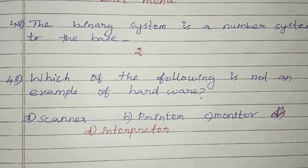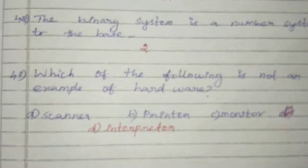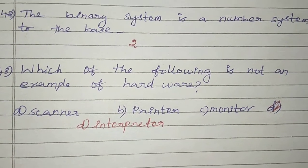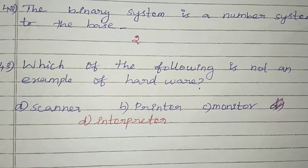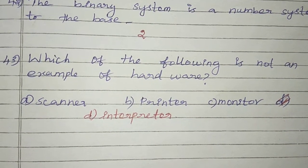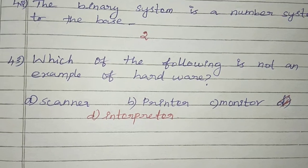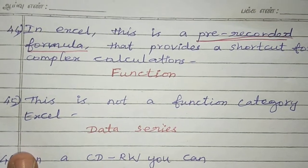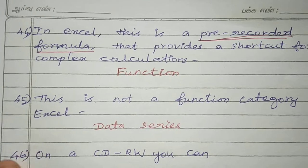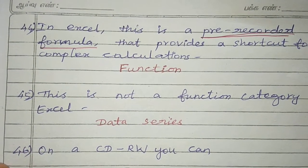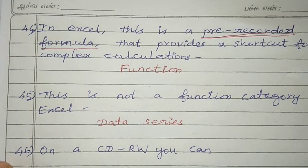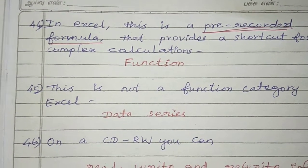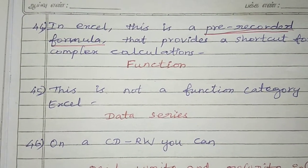Question 43: Which of the following is not an example of hardware? Answer is Interpreter. Question 44: In Excel, this is a pre-recorded formula that provides a shortcut for complex calculations. Answer: Function.